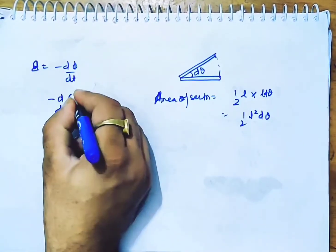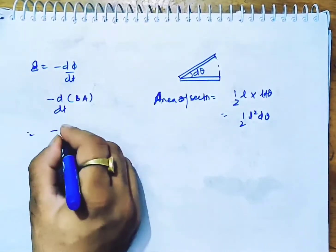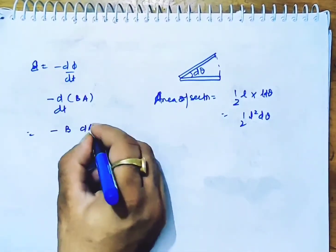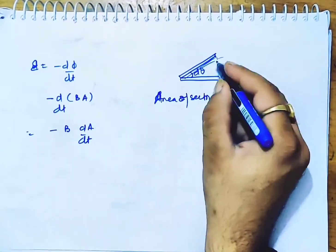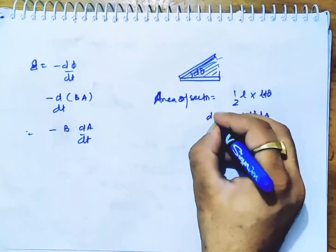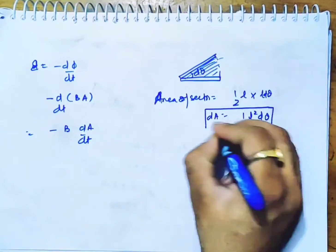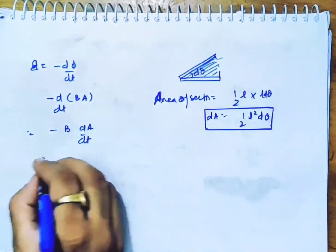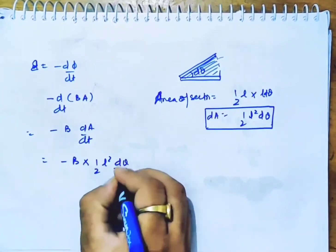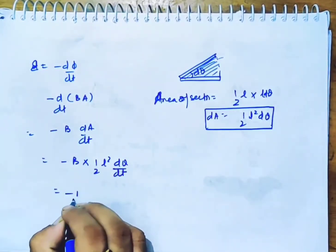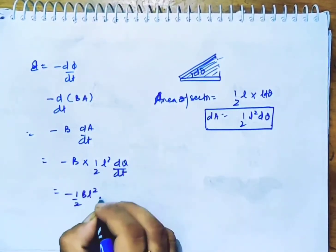Minus d by dt of B into area, which is minus B dA by dt. We have found the dA, so put it here: 1 by 2 L squared d theta divide by dt. So you have minus half B L squared d theta by dt, which is omega.